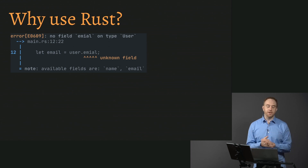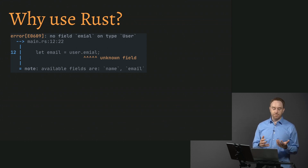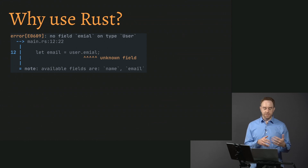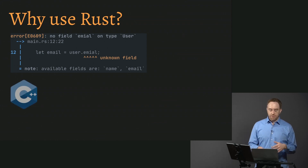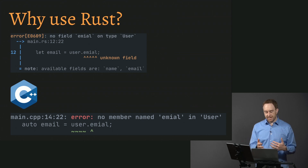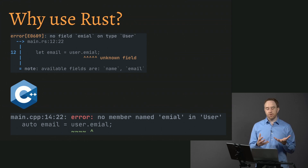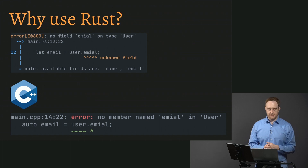Here's a concrete example. Here's a Rust compiler error for a typo: 'no field email on type user,' because I misspelled email. It says 'note: available fields are name and email.' Contrast this to the same error in C++: 'main.cpp error: no member named email in user' — and that's about it. It doesn't show you the line number or hint at available fields. It's just generally a much friendlier experience than you'd get from C or C++, even modern compilers.